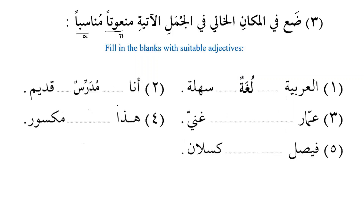Why do we say 'mudarrisun' and 'qadimun'? Because we are discussing al-masuf wa al-sifah — noun and adjective — and they are equal in the four properties of the noun. I apologize for repeating this, but I want you to get used to it. This is only Book One; in Books Two and Three there will be no need to repeat it. 'Ammarun tajirun ghaniyyun' — Ammar is a rich merchant.